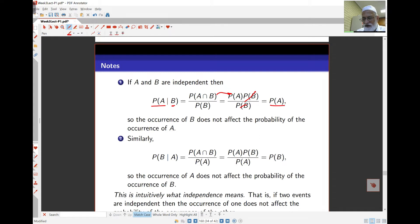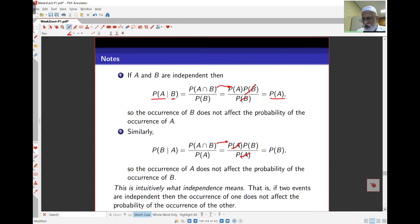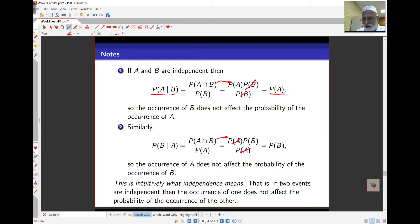Likewise, if I look at probability of B given A, the same thing occurs. The top line is probability of A intersect B over probability of A. And this, again, will be written as probability of A times probability of B. These cancel off and get probability of B. So, likewise here, the occurrence of A doesn't affect the probability of B. And that's what independence means intuitively. And so, you can see the definition we had earlier actually does support the intuition we had.